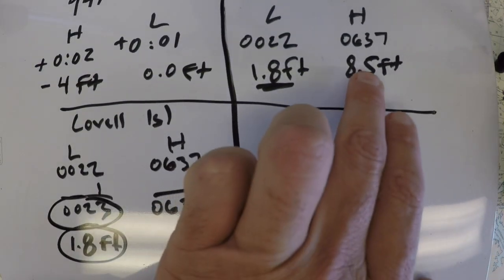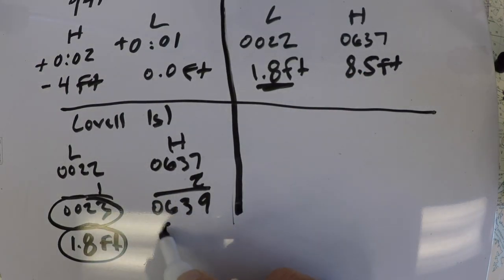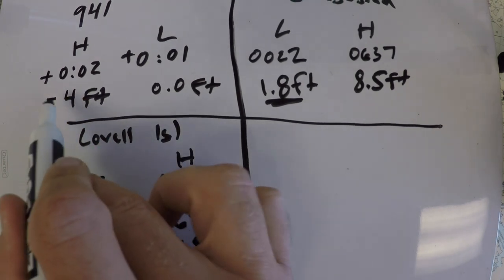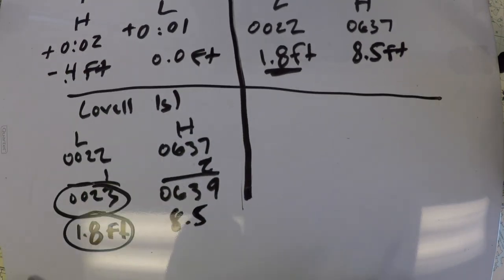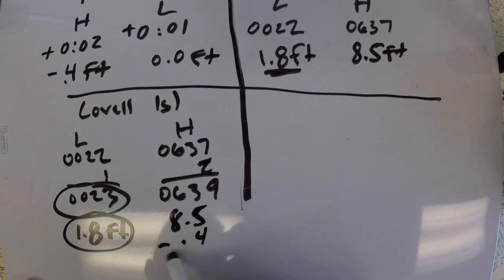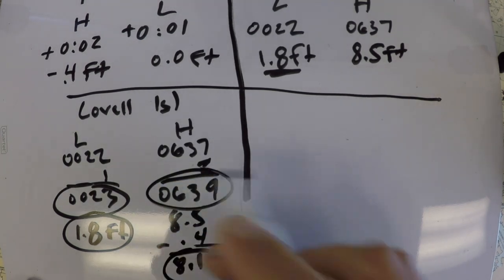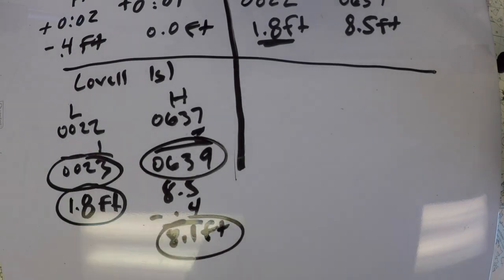For the high, it's 8.5 feet from Boston. And the correction is minus 0.4 feet on that. That leaves it to be 8.1 feet at 0639. So given this information, the last step is to use table three in the back of the tide tables.